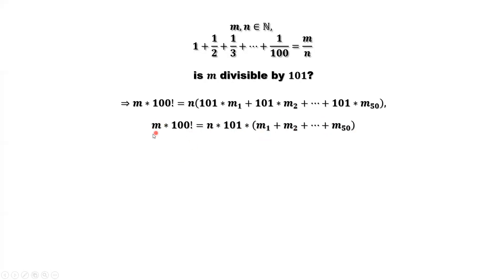Is this m divisible by 101? We are not sure. Because here we have 100 factorial. Do we have some factors we can cancel from 101 and 100 factorial? No. Because 101 is a prime number. That means 101 only has two factors: 101 and 1.